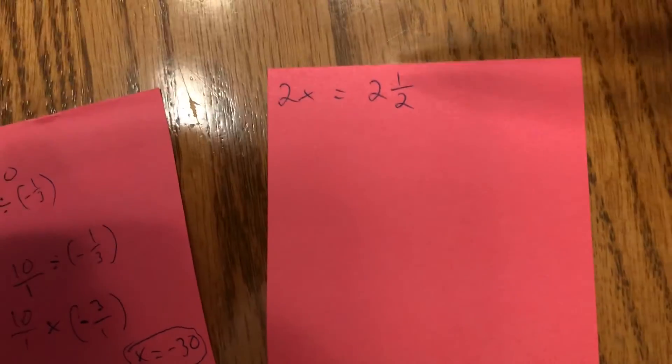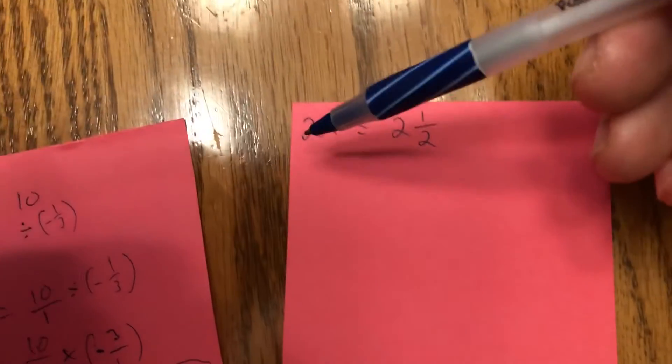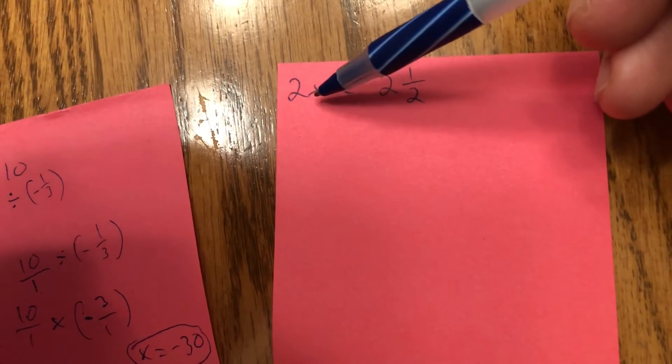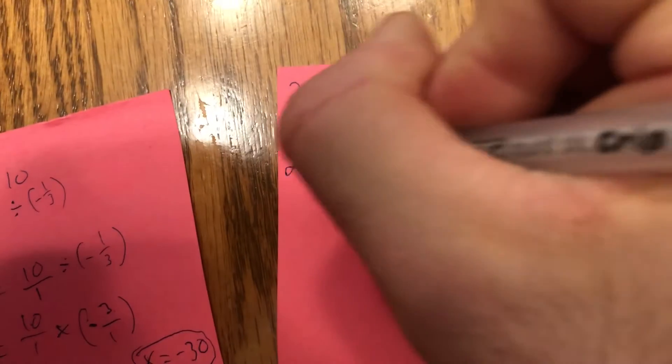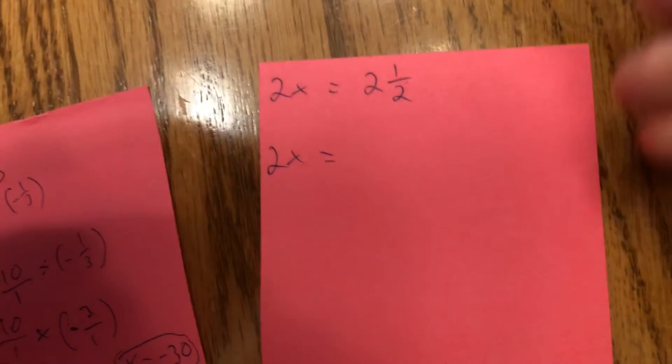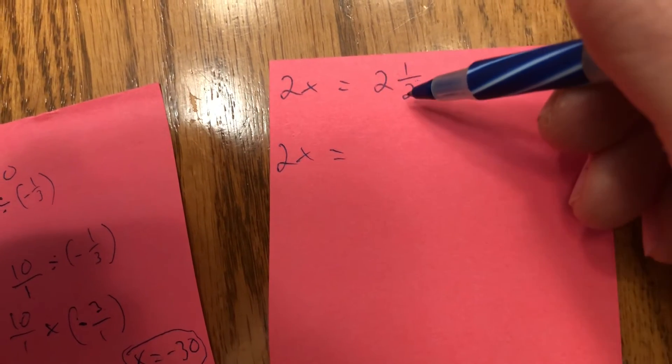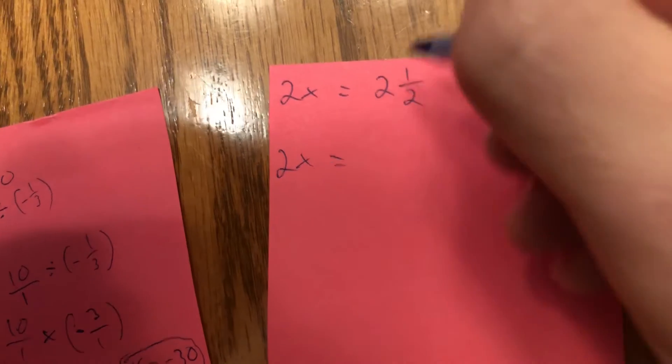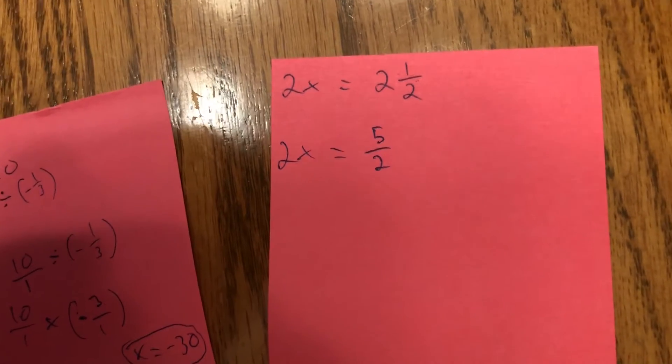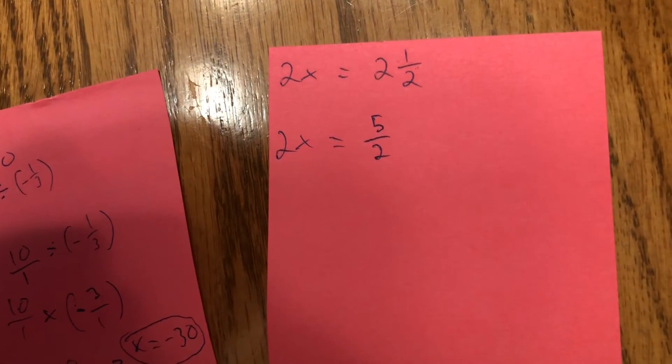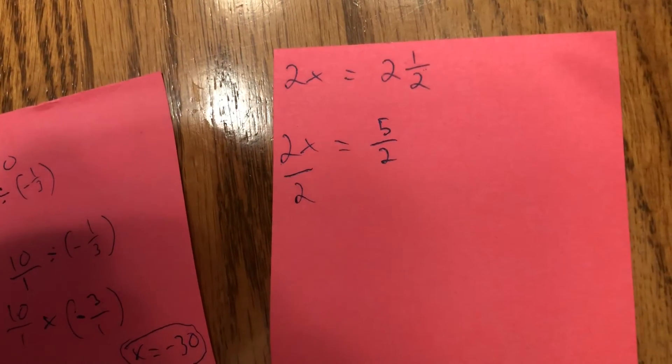We are dealing with mixed numbers now. The mixed number, of course, has a whole and a fraction combined. This is 2 1/2. What we're saying is 2 times whatever this variable represents is equal to 2 1/2. Well, first step before we are actually able to solve this is to turn that mixed number into an improper fraction. So, I've got two wholes. There's two parts in each of them. So, 2 times 2 is 4 plus that one remaining part. That's going to be 5 halves or 5 over 2. Now, I can isolate x. I've got 2 times x. Well, the inverse of 2 times, that, of course, would be divide by 2.